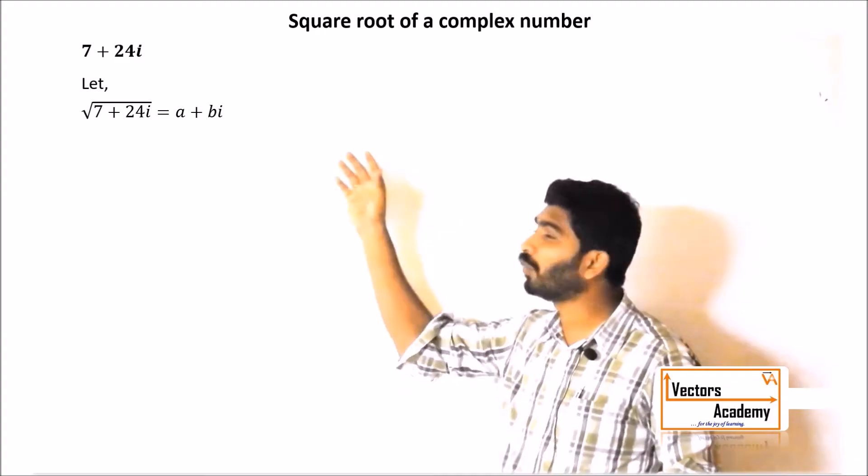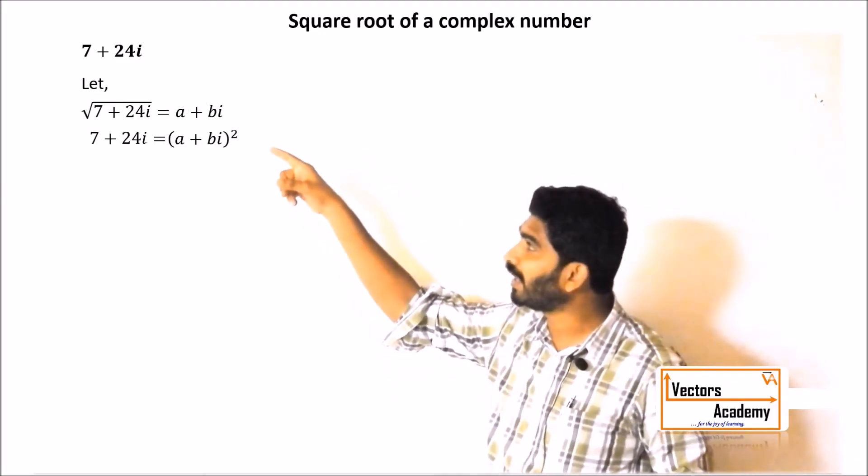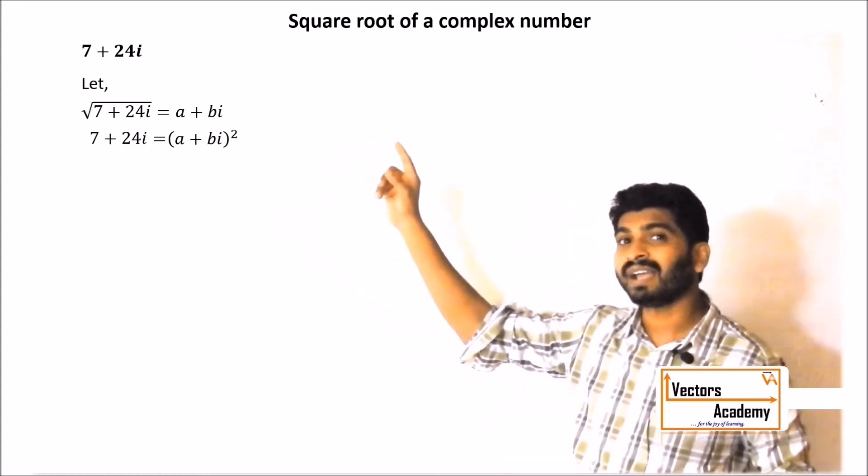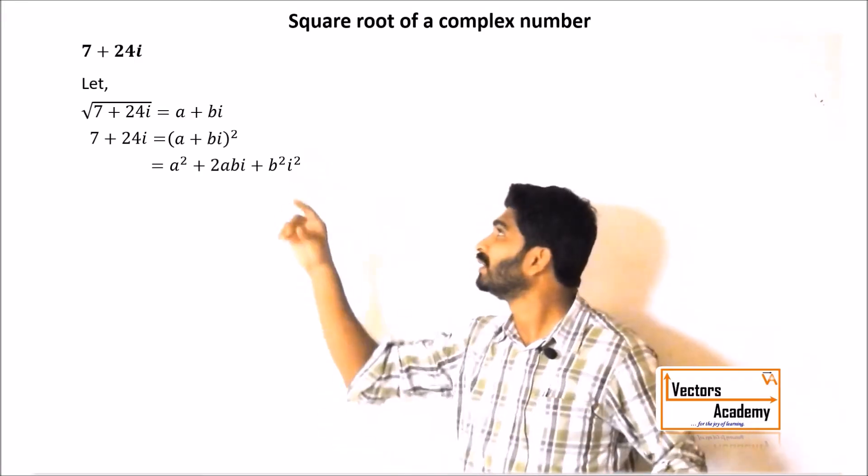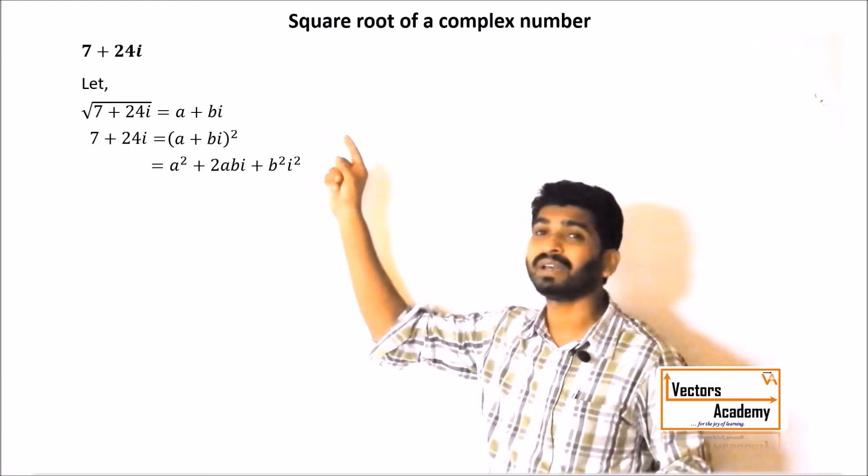We square both the sides. Squaring the left hand side gives 7 plus 24i. Squaring the right hand side and expanding within the formula a plus b the whole square, we get a² plus 2abi plus b²i².